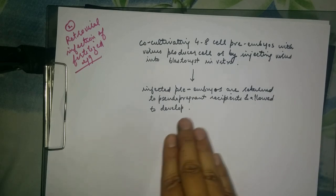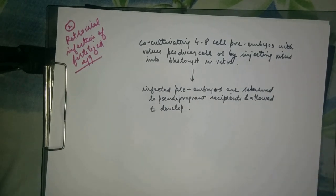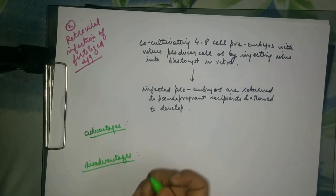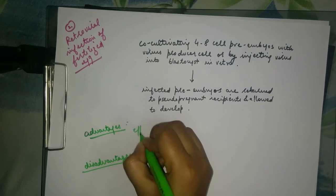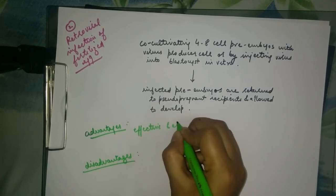That is the initial stages of development in vitro. Then the infected pre-embryos are returned to the pseudopregnant recipients and they are allowed to develop. The advantages of this method is that it is an effective and efficient method.